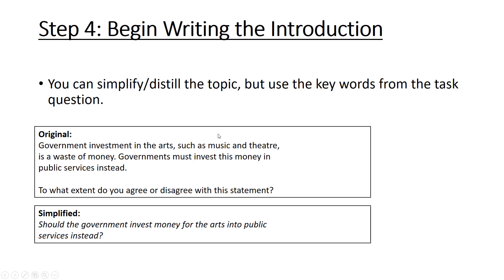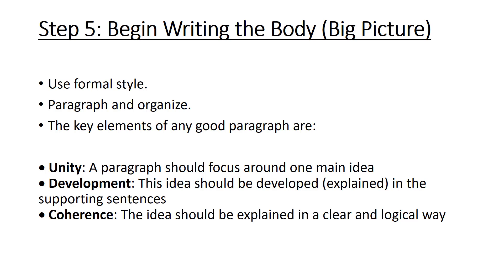Sometimes the tasks in Task 2 of the writing test are a little overwritten and it can be difficult to understand exactly what you need to focus on. Here we see two examples where you can distill the topic. The original reads: 'Government investment in the arts such as music and theater is a waste of money. Governments must invest this money in public services instead. To what extent do you agree or disagree?' If you distill the topic you get: 'Should the government invest money for the arts into public services instead?' — it just makes it easier to plan your essay.